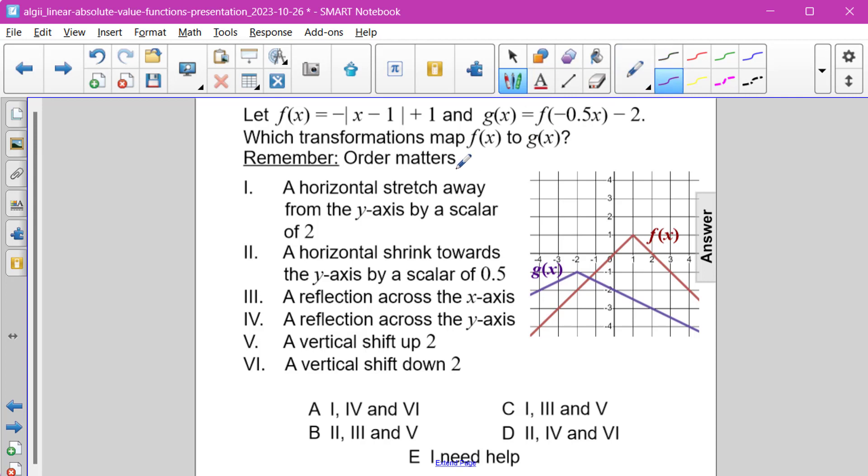So first let's look at the different Roman numerals and our transformation function. We have a negative 1 half x inside the parentheses. The subtraction of 2 has to go last, and that's going to be a vertical shift down.